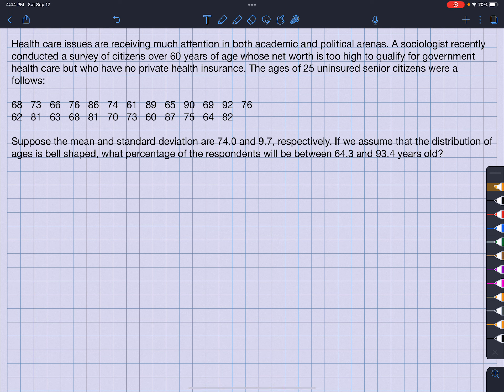Now, it says suppose the mean and standard deviation are 74.0 and 9.7, respectively. In other words, they computed something for you. Actually, let me set this up differently. The mean is 74.0, and the standard deviation is 9.7. So if we assume that the distribution of ages is bell-shaped,